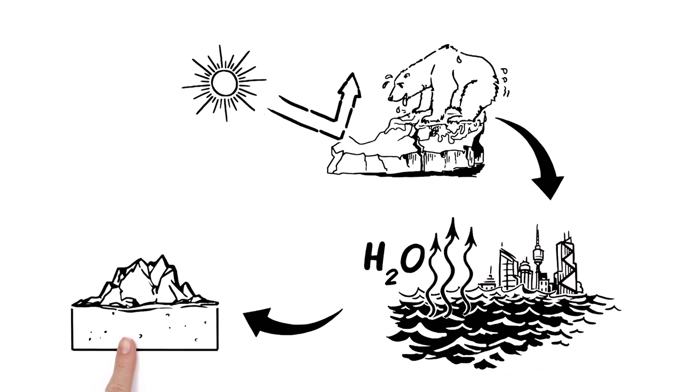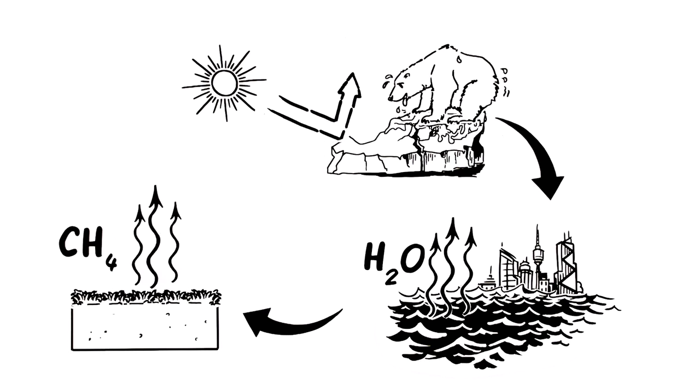Also, grounds which stored centuries-old methane are thawing. The poisonous gas escapes and worsens the greenhouse effect. The vicious cycle starts again.